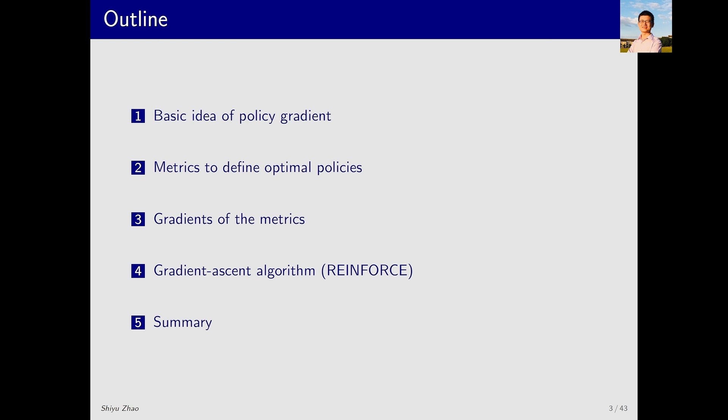Here is the outline for today's lecture. First, I will introduce the basic idea of policy gradient methods. In fact, its core idea is very simple. This simplicity will be reflected in sections 2, 3, and 4. First, we will define a metric for optimization. This metric is used to determine which policies are optimal. Once we have this metric, the next step is to optimize it. How do we optimize it? The simplest way is to use the method of gradient ascent. Since our goal is to maximize this metric, we apply gradient ascent. If the goal were to minimize it, we would use gradient descent. To apply gradient-based methods, the first step is to calculate the gradient of the metric. Afterward, I will introduce the gradient ascent algorithm. Specifically, we will present a well-known algorithm called REINFORCE. This is one of the earliest policy gradient algorithms. Based on this algorithm we can extend and derive many other popular methods that are widely used today. Let's first introduce the basic idea of the policy gradient method.